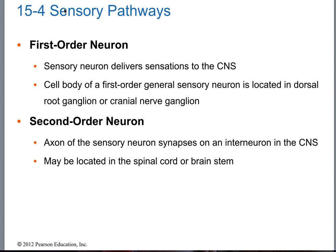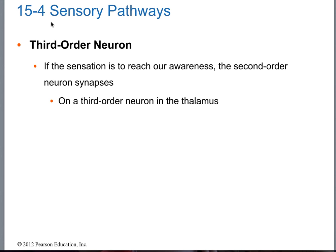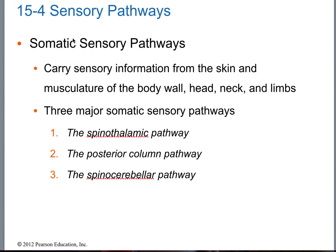First order, second order, third order neuron — that represents a sensory pathway. There are two pathways you need to know: spinothalamic and dorsal column (also called posterior column). We'll also cover spinal cerebellar — the word itself starts with spine and ends with cerebellum, so it's an ascending sensory pathway that takes information to the cerebellum, which handles unconscious proprioception, balance, and coordination.